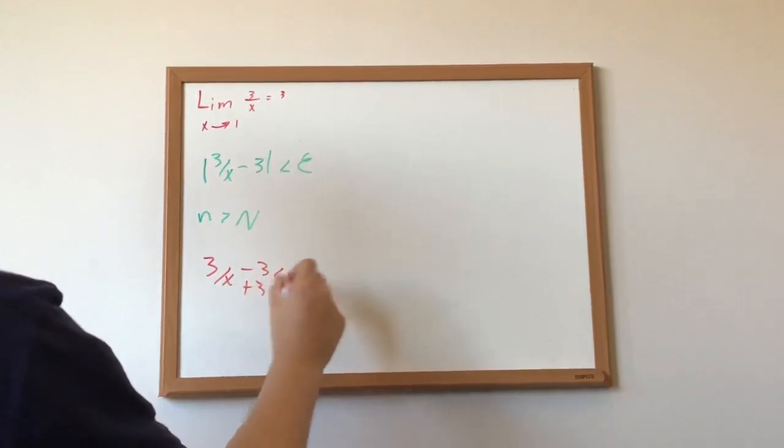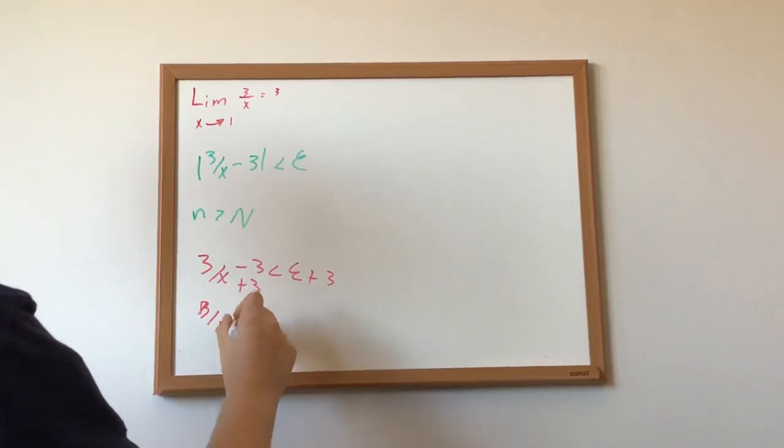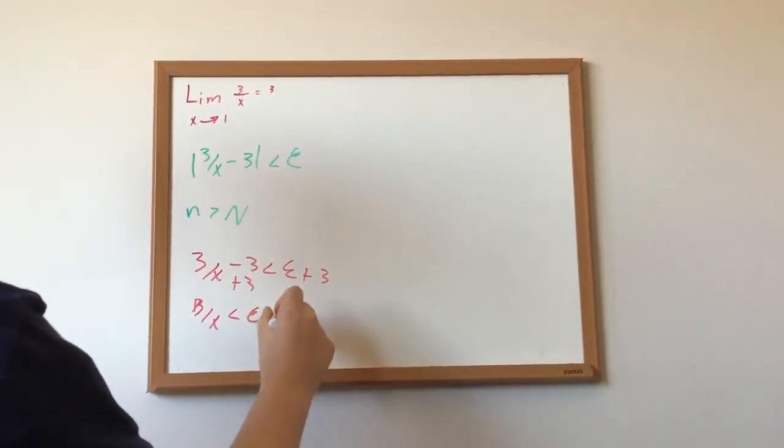Add 3 to both sides. We get 3 over x is less than epsilon plus 3.